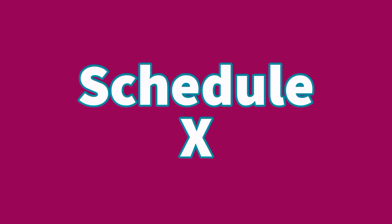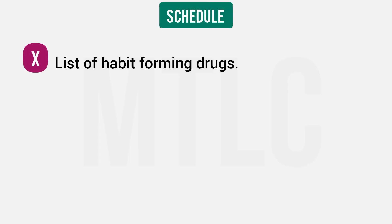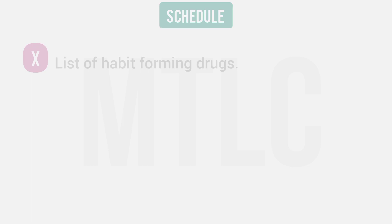Schedule X covers habit-forming drugs. Schedule Y covers requirements and guidelines for clinical trials, as well as requirements and guidelines for import and manufacturing of new drugs. If you have a new drug to manufacture or import, it is governed by Schedule Y.